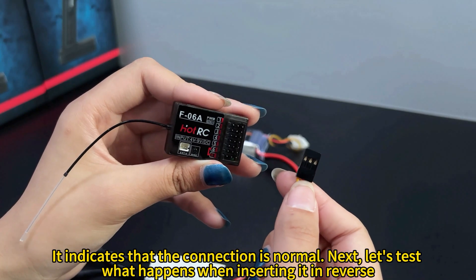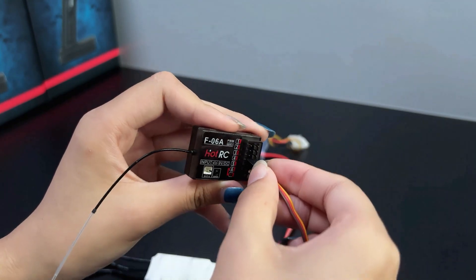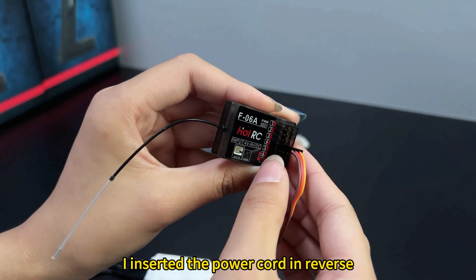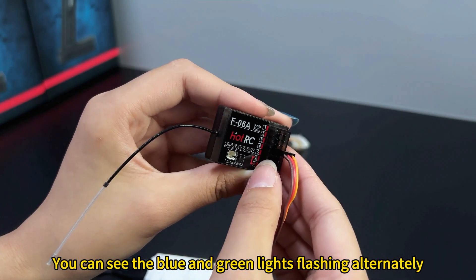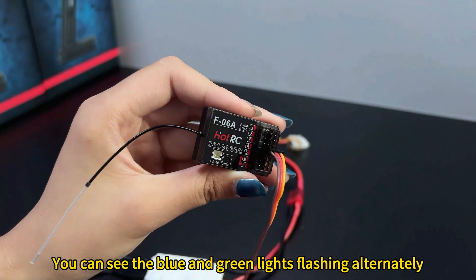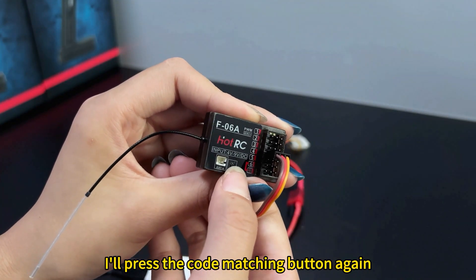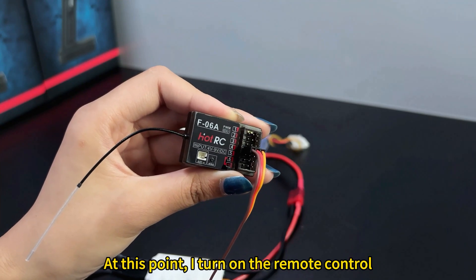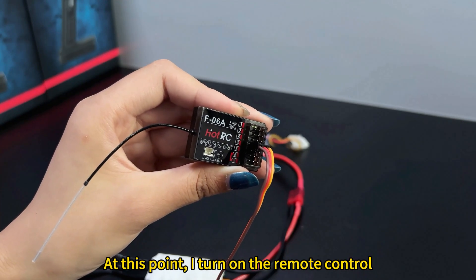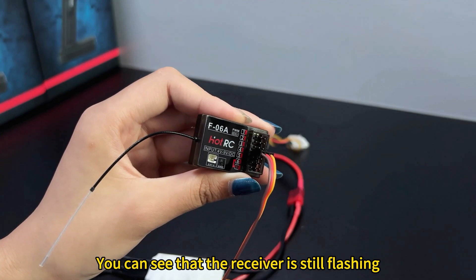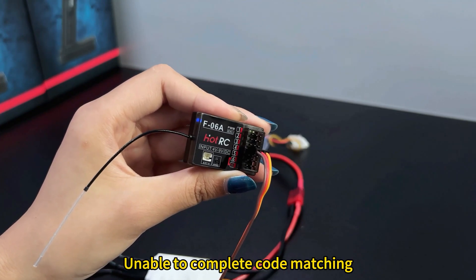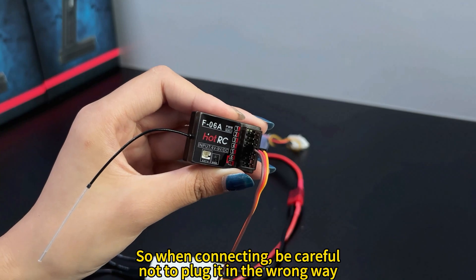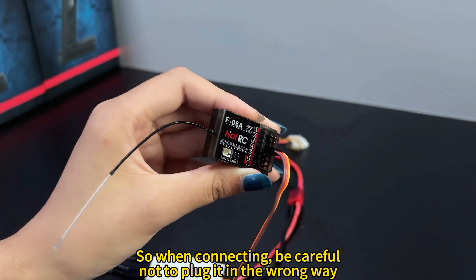Next, let's test what happens when inserting it in reverse. I inserted the power cord in reverse. You can see blue and green lights flashing alternately. I'll press the code matching button again. No other response from the receiver. At this point, I turn on the remote control. You can see that the receiver is still flashing, unable to complete code matching. So when connecting, be careful not to plug it in the wrong way.